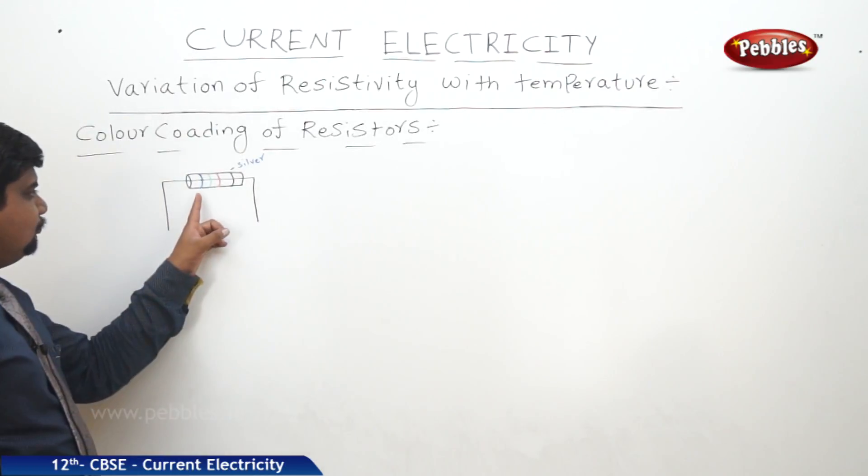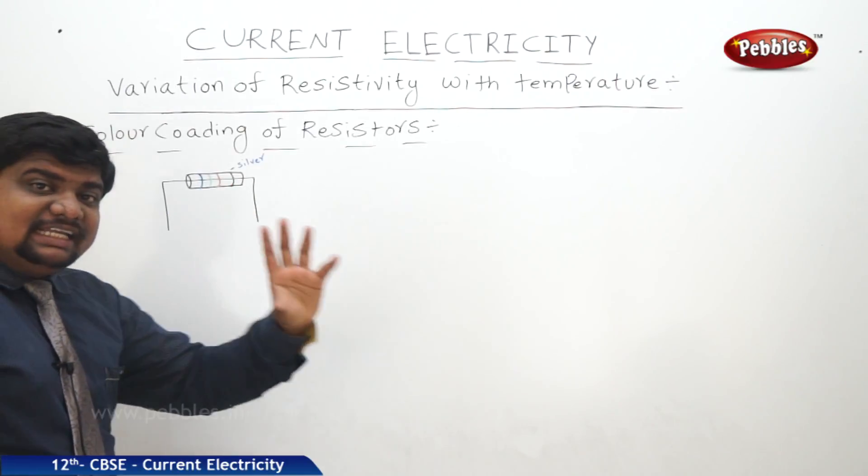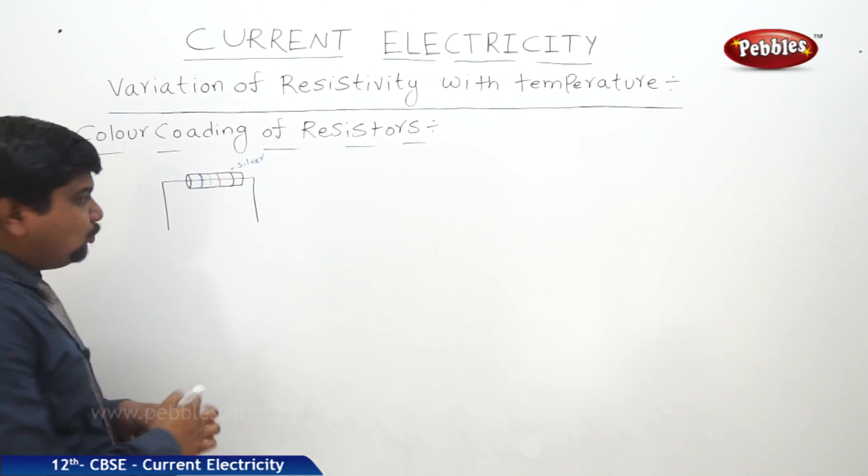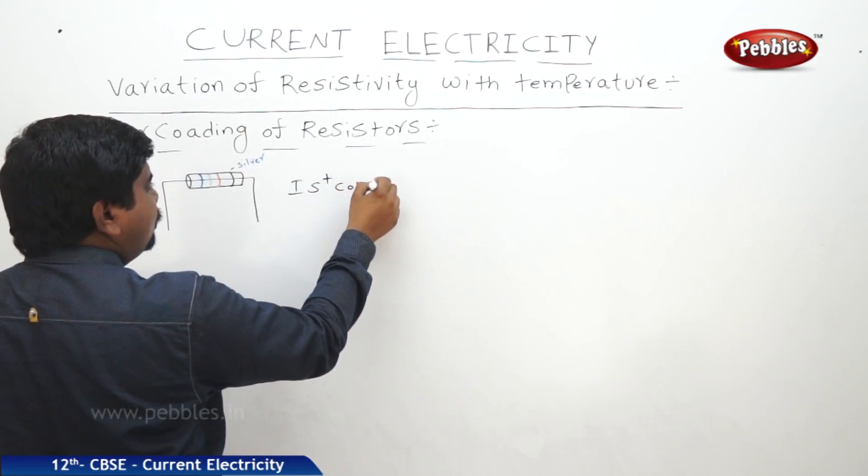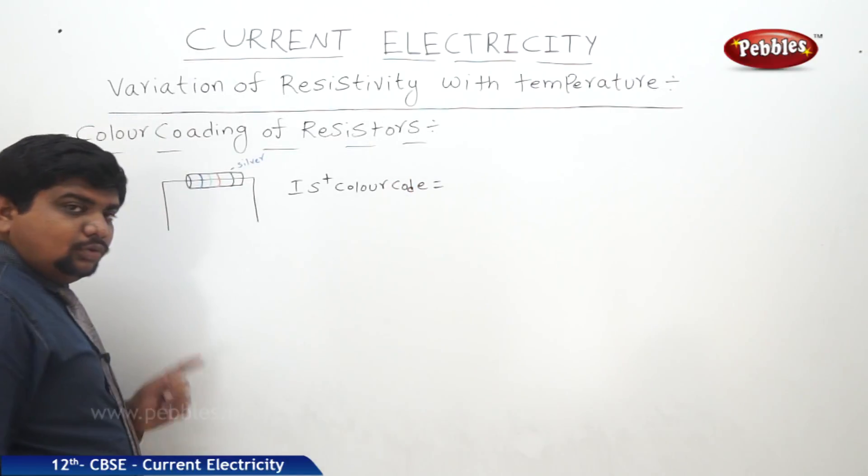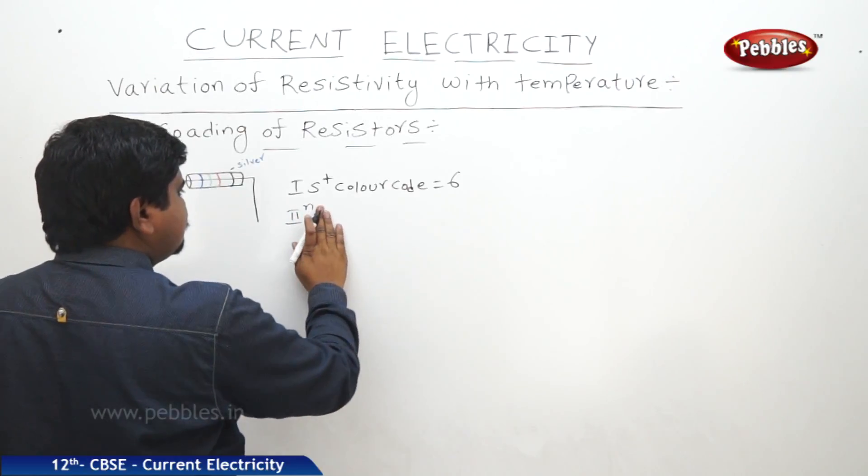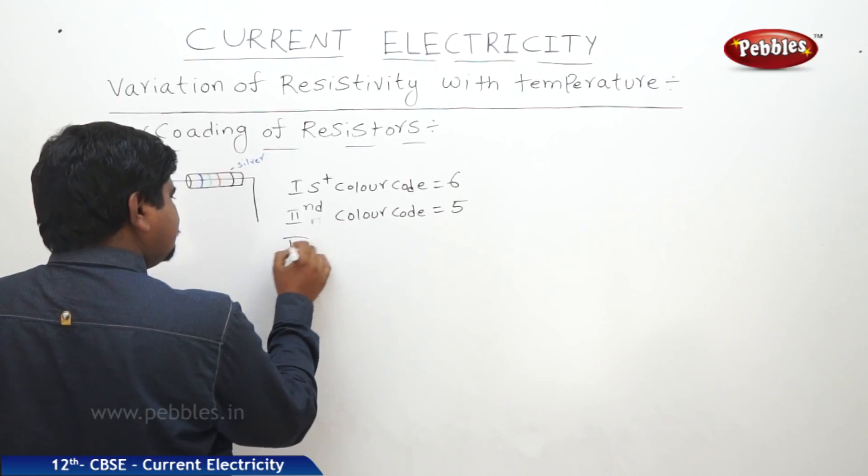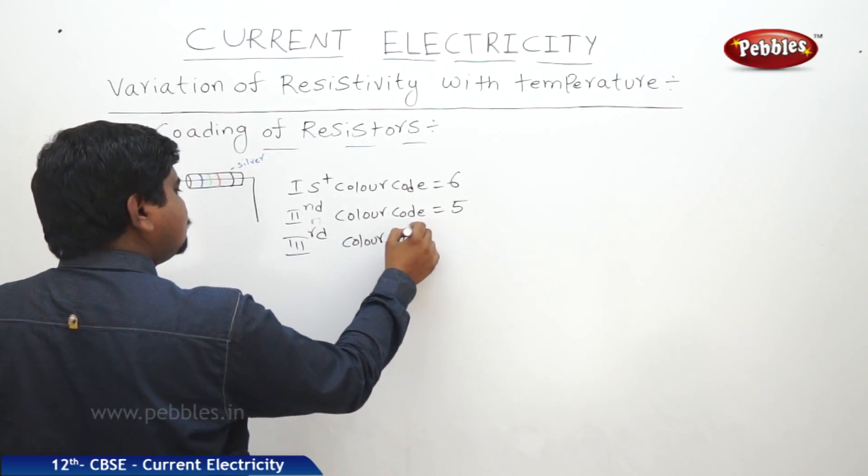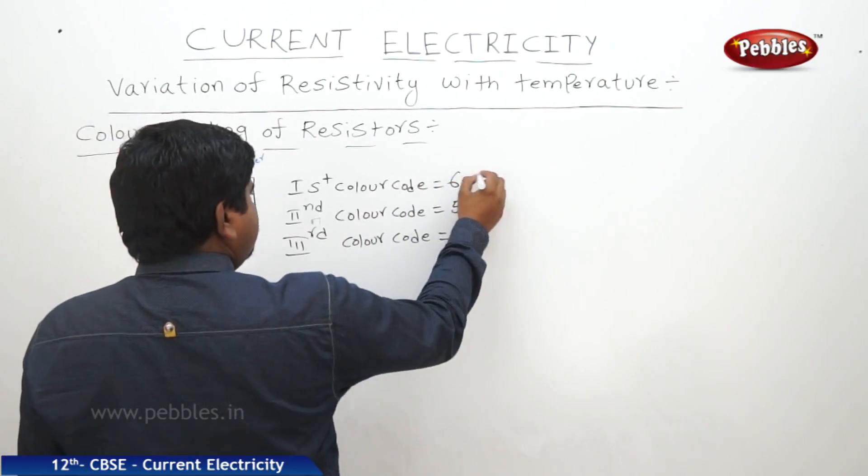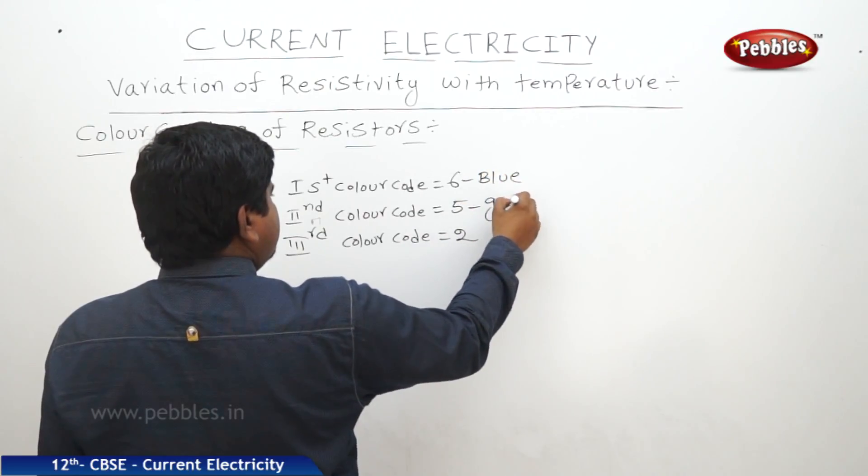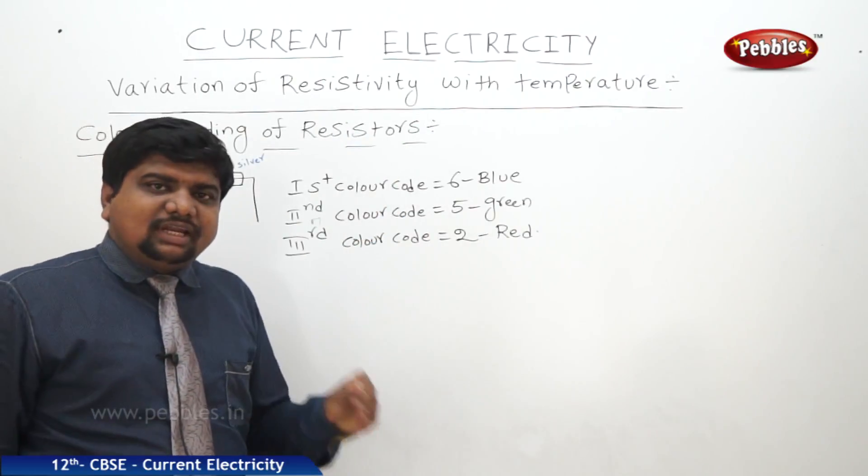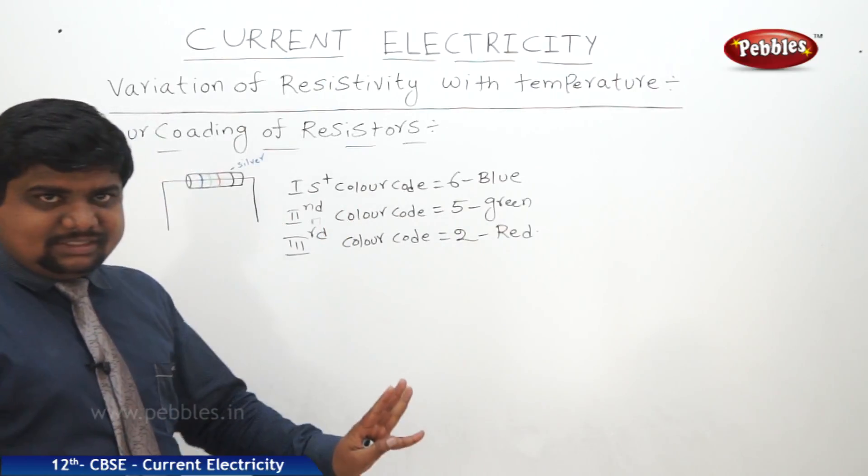So this is the color coding. Blue, green, red colors, and this is silver. What is the direction to count? If this is the silver coating, from here we find the direction. What is the first color code? Blue is 6. Second color code is Green, 5. Third color is Red, 2. Silver coating means it has 10% tolerance. It can tolerate 10% more than its maximum capacity.